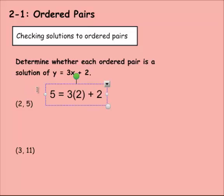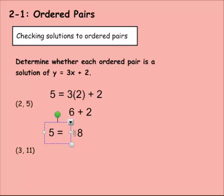Is this going to be a solution? Are they going to both equal the same number? Well, we know that 3 times 2 is 6, and then plus 2. That would give us 8. So does 5 equal 8? No, it certainly does not. So this would be not a solution.